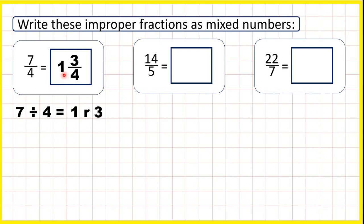So, our mixed number is 1 and 3 quarters. The 1 is our whole number, and the remainder 3 is our numerator.